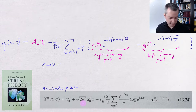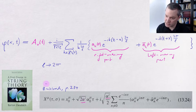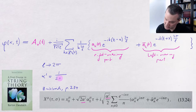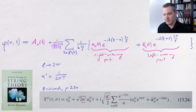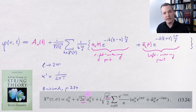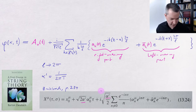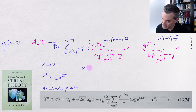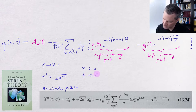Second, he uses the Regge slope alpha prime, which is defined such that alpha prime equals 1 over 2π times the string tension T. And with these two replacements, our factor of square root of TL downstairs becomes a factor of square root of alpha prime upstairs. The second change is that instead of x, Zwiebach uses sigma, and instead of T, he uses tau.